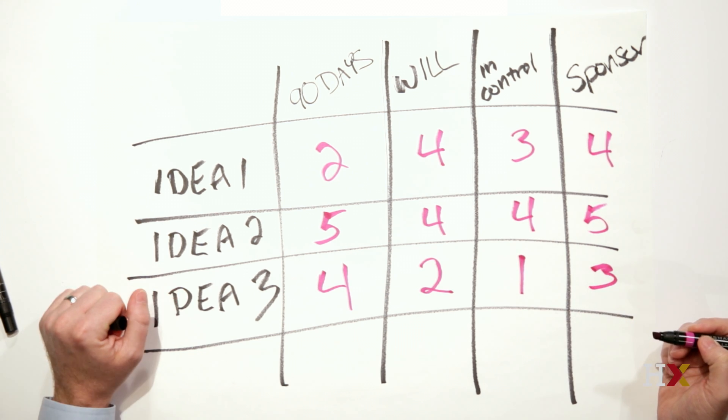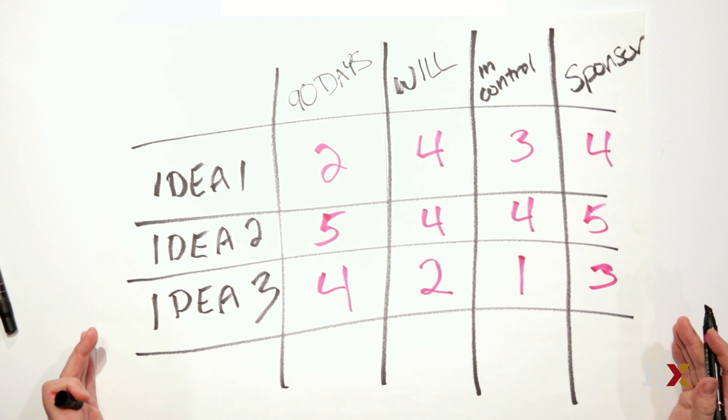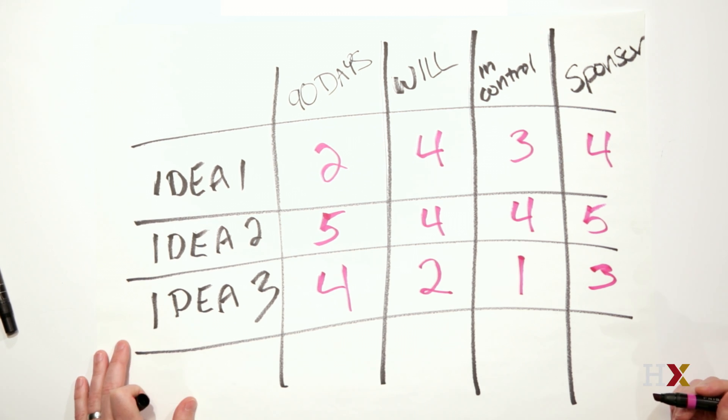So as I'm looking at my matrix, now I can kind of look at my data and say, well, which of these ideas has the best chance of success, right? And in this particular case, as I look across them, I might decide to select idea two.